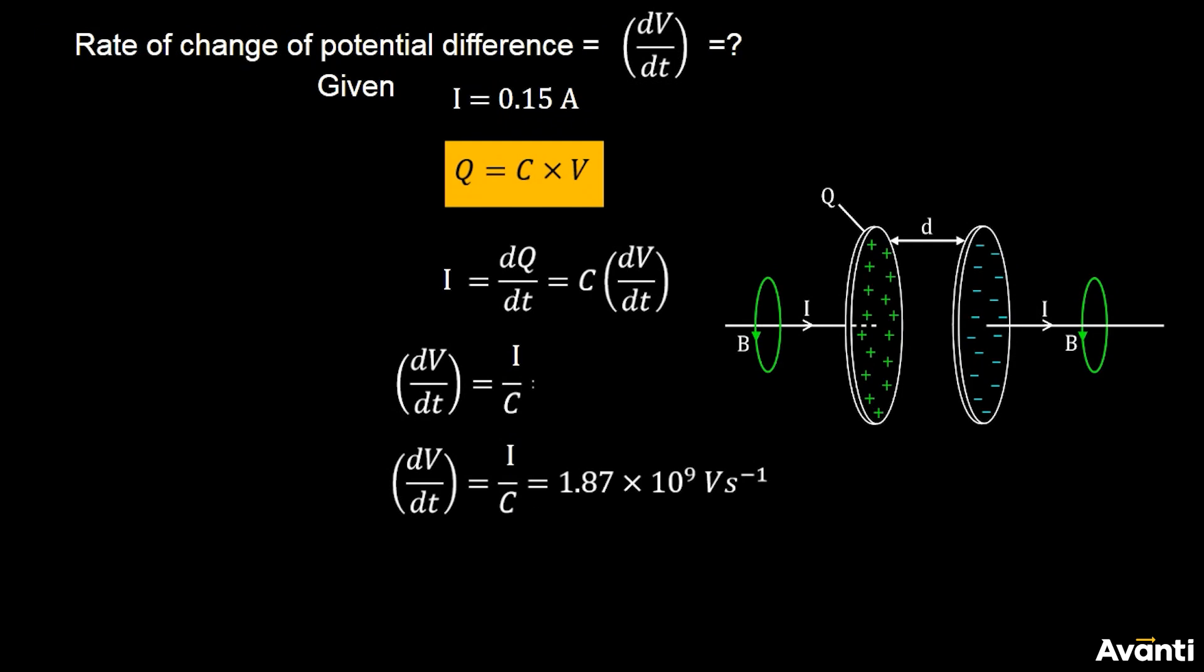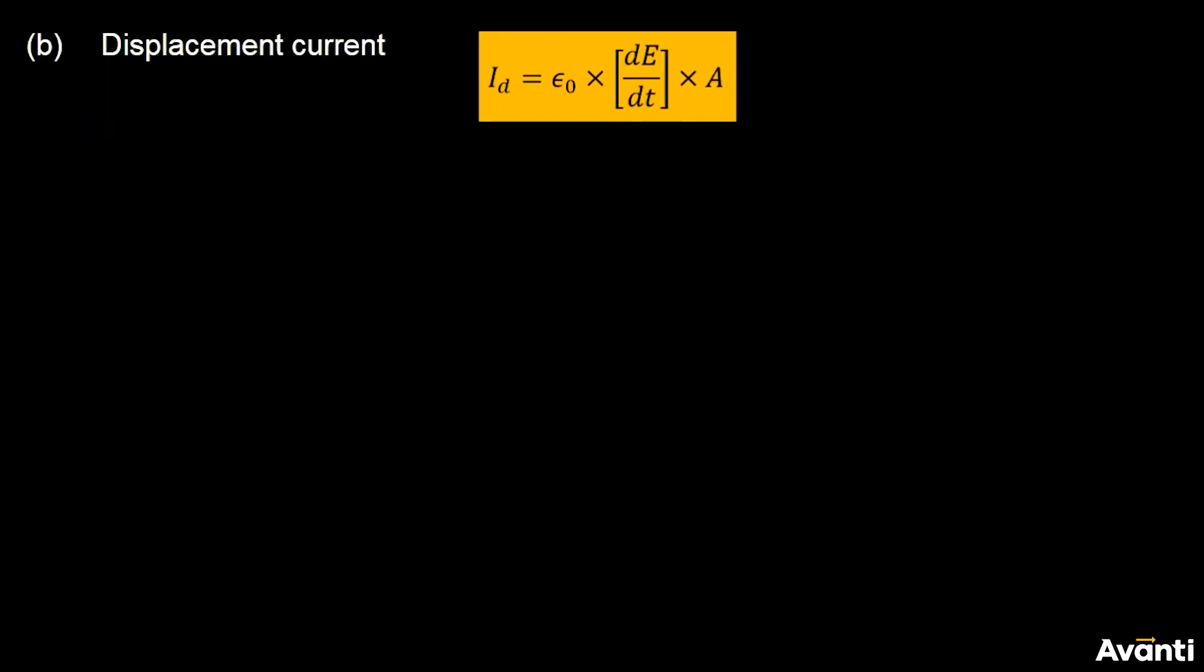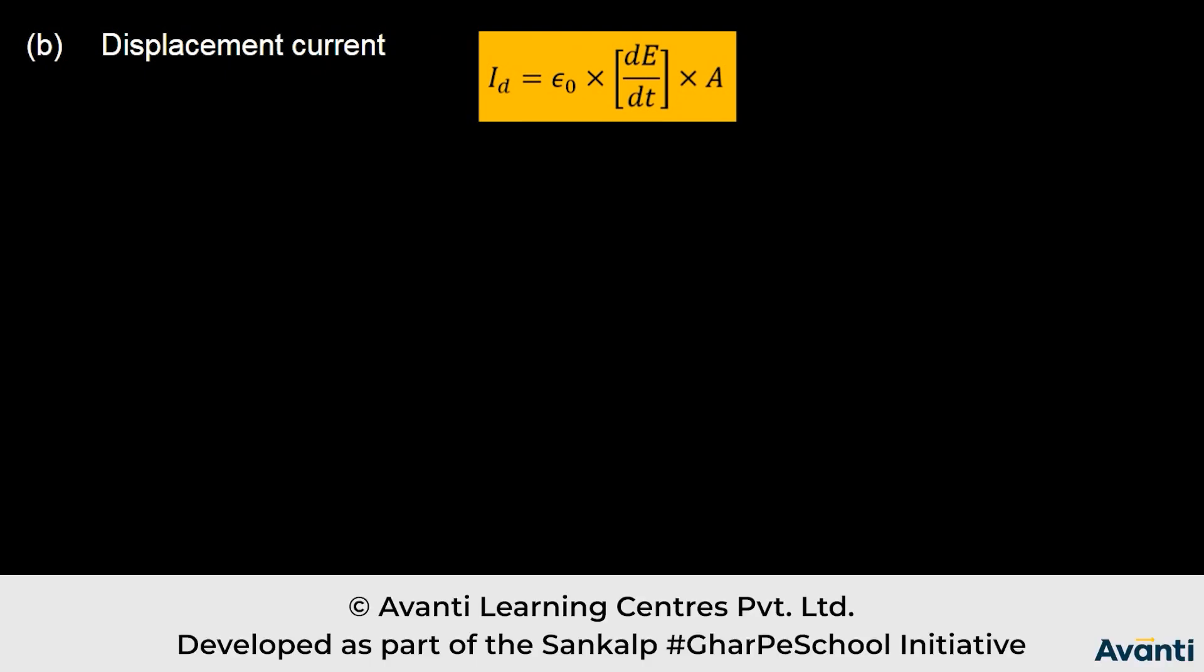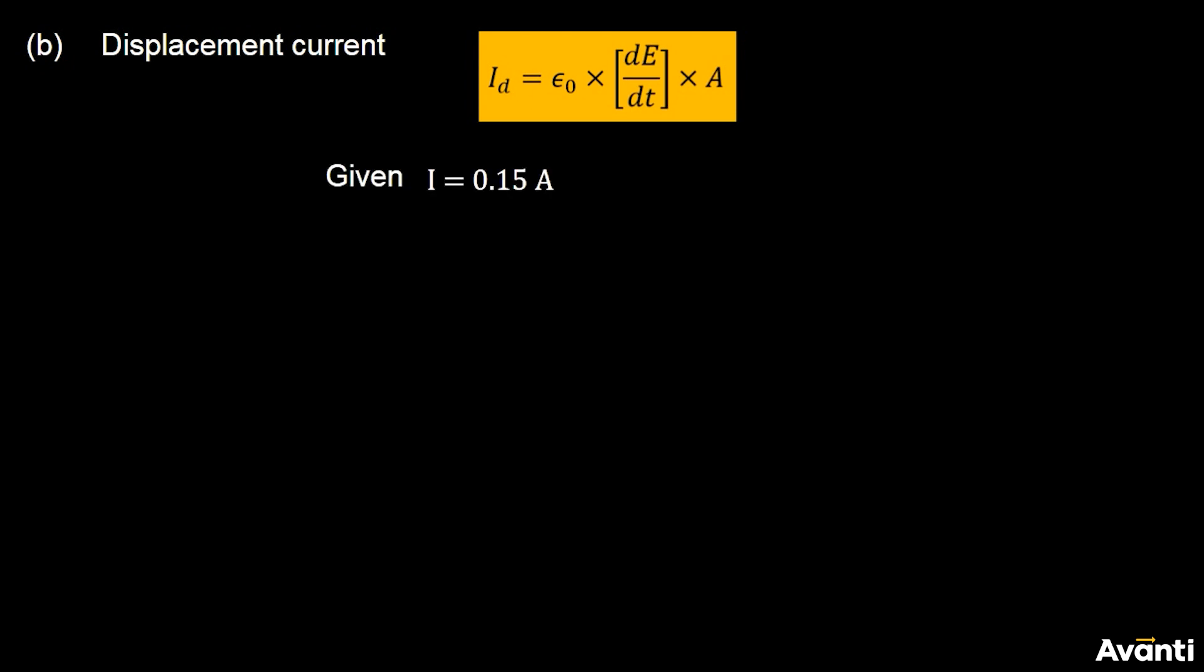Now the second part, that is displacement current. Displacement current ka formula is epsilon 0 into d by dt into area of the plates. Electric field is sigma by epsilon 0, and sigma is Q by A, charge per unit area. So if I add values, electric field is Q by A epsilon 0. And if I add this electric field value in displacement current.